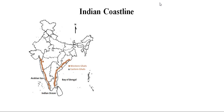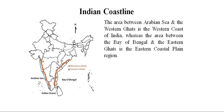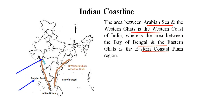Coast simply means the area or region which is very near to the sea surface and ocean surface. In India, the area between the Arabian Sea and the Western Ghats is the Western Coast. In this map you can see the Arabian Sea on the western part and the Western Ghats here; the white shaded region between them is simply known as the Western Coastal Plain.